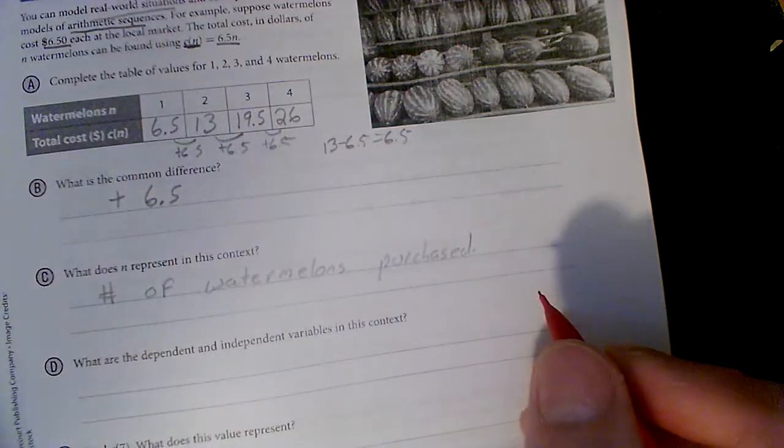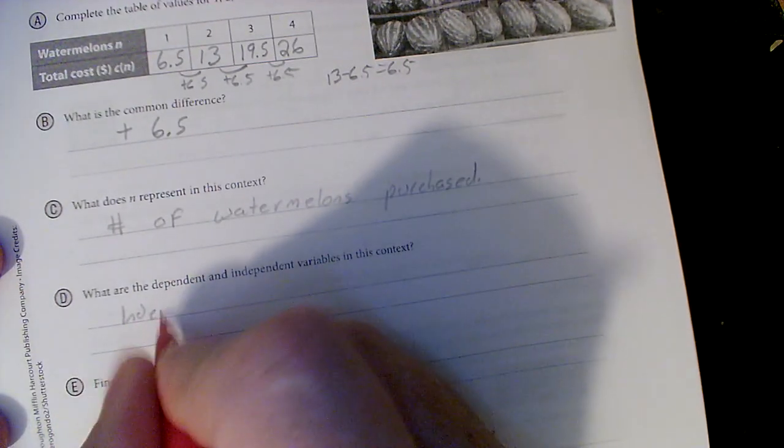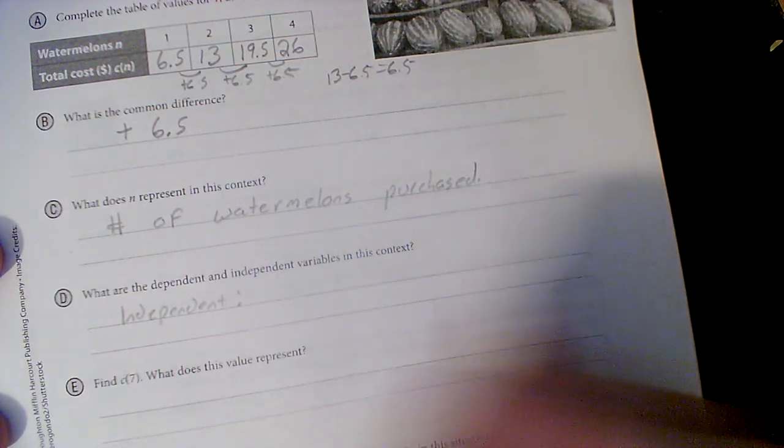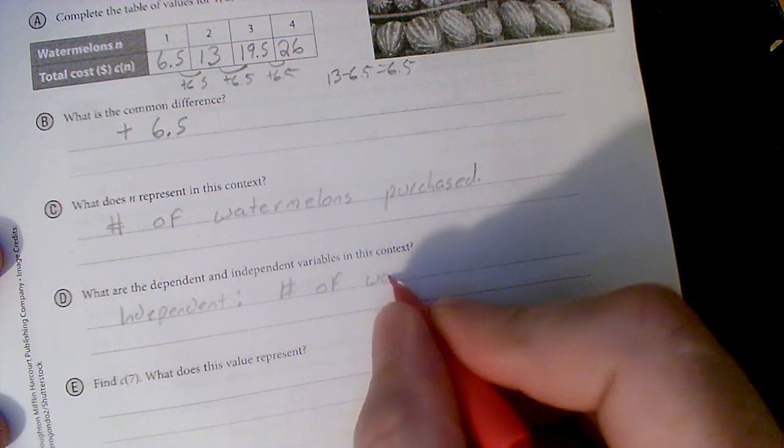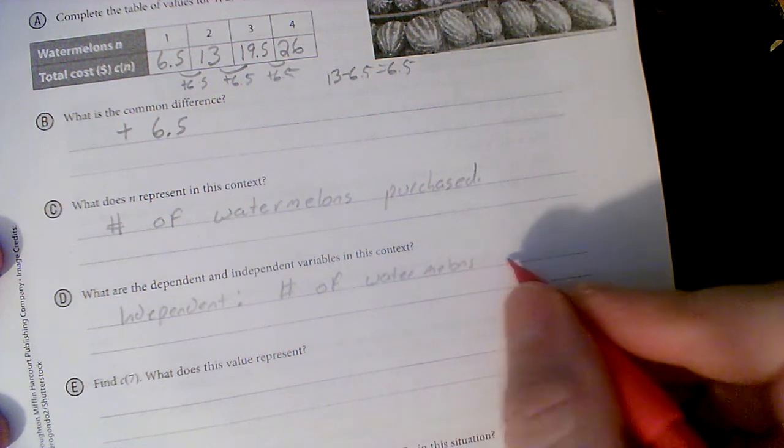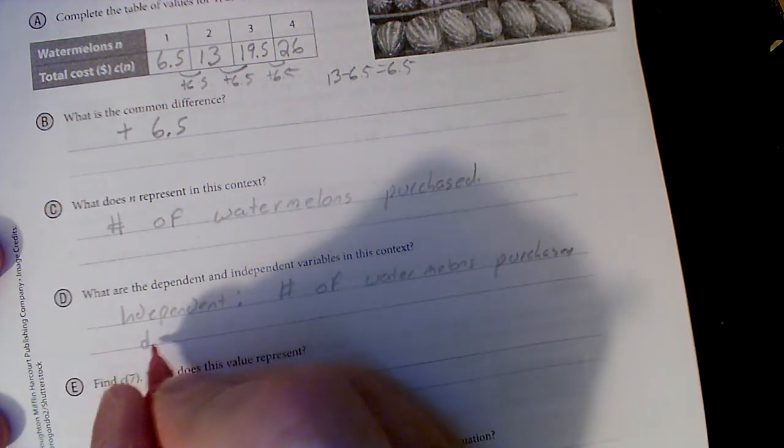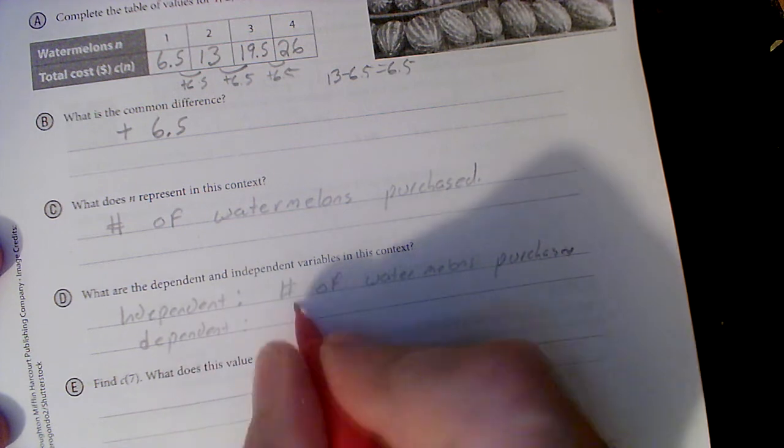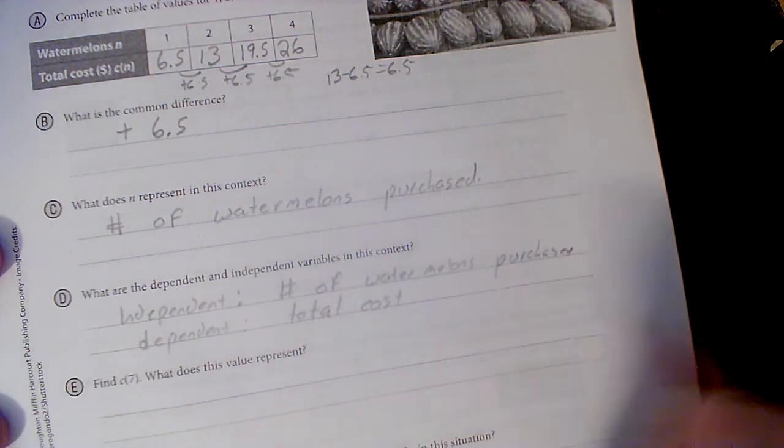What are the dependent and independent variables? Okay, independent in this case is the number of watermelons purchased. And the dependent is total cost. Watermelons affect total cost, not the other way around.